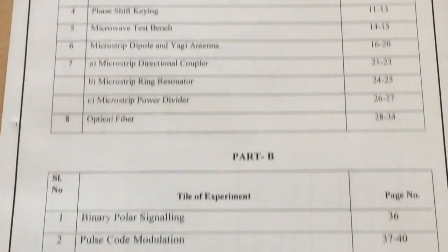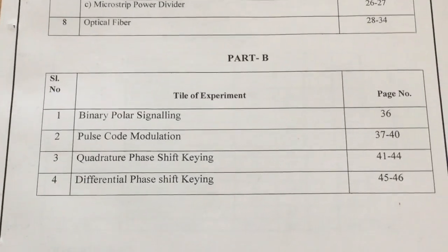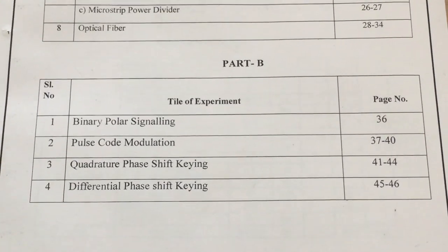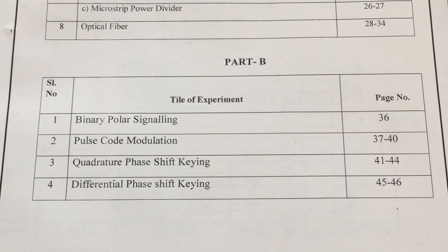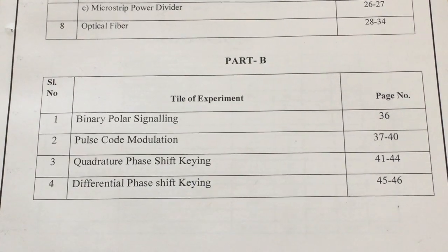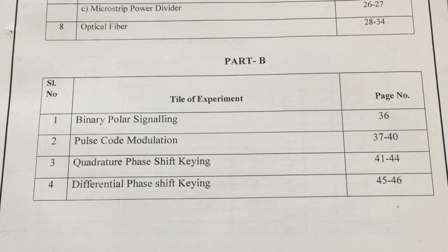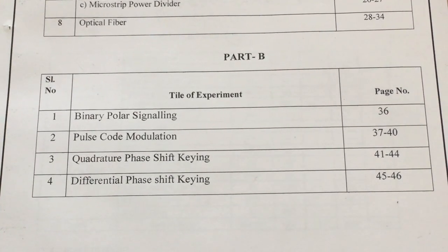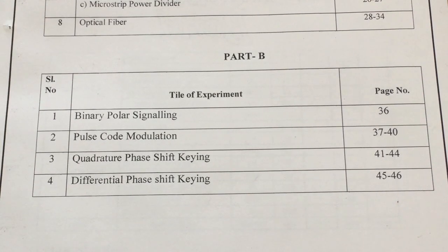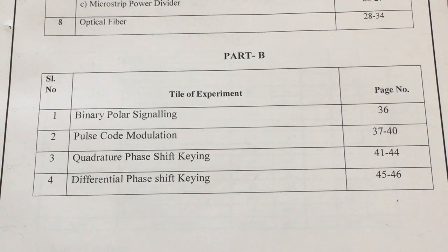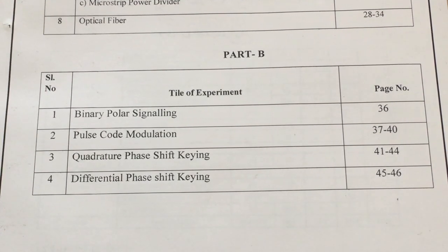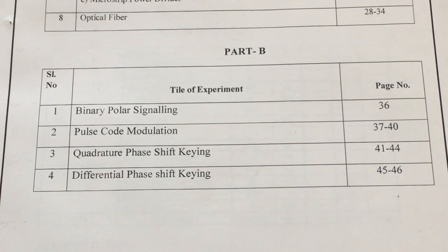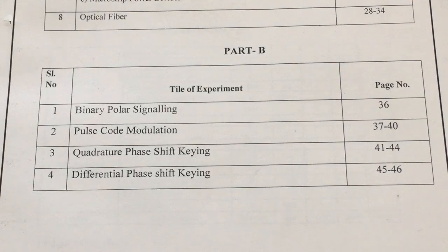The Part B experiments are: Bipolar Signaling (that is, Binary Polar Signaling), Pulse Code Modulation, Quadrature Phase Shift Keying, and Differential Phase Shift Keying.